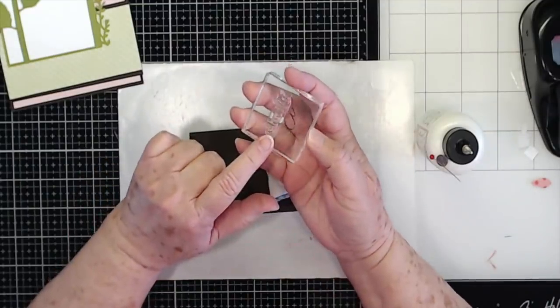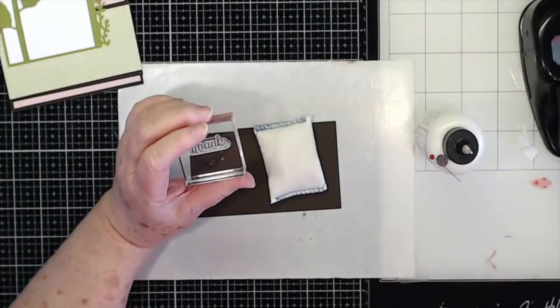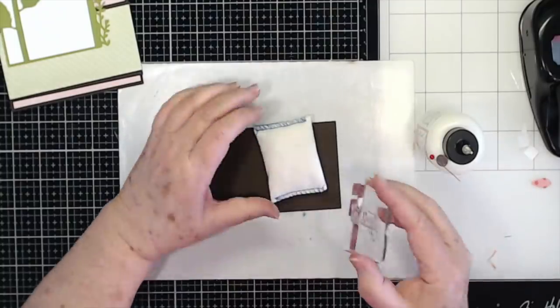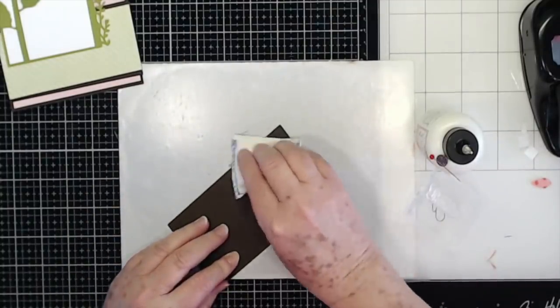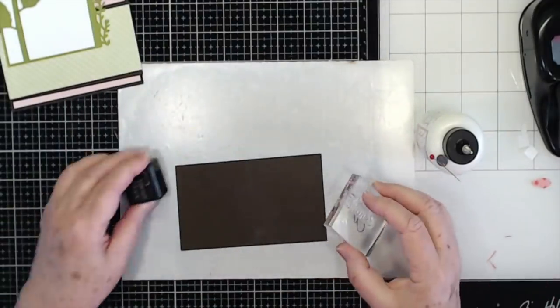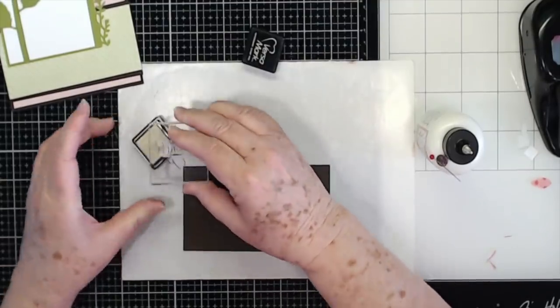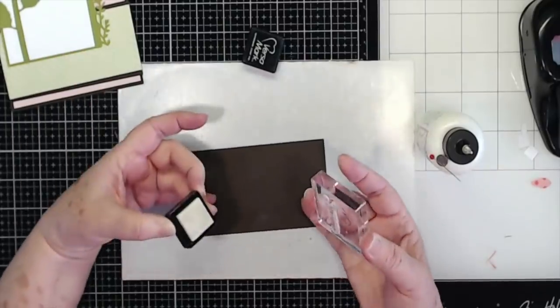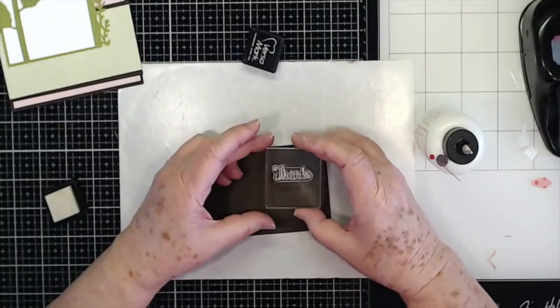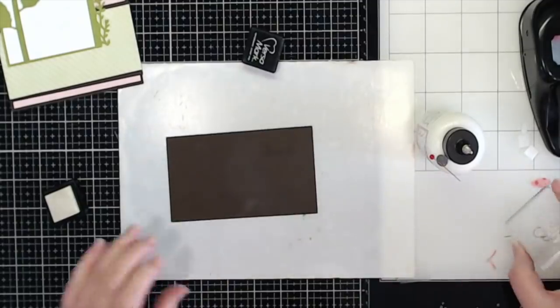Then I have a stamp that just says thanks, and this comes from a Mei Mei stamp set. Let's see what it's called, it's called Just to Say. And we're going to emboss this one. I'm going to put it on this brown card stock and use some Versamark. Now what I did first is I put my chalk down on there so that my embossing pattern won't stick everywhere. I'm just going to press that down just like that.